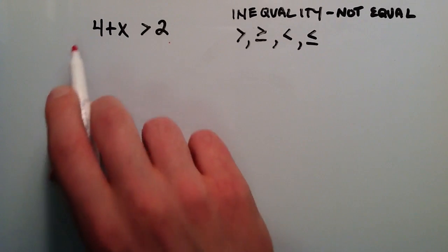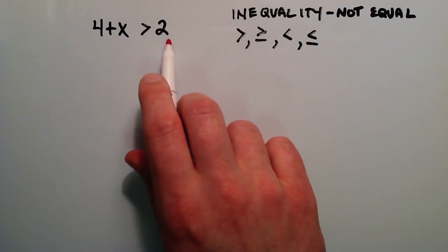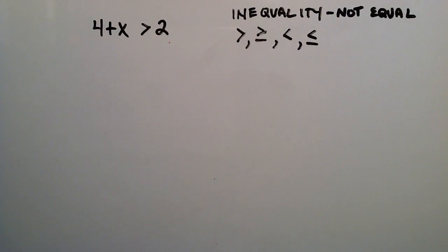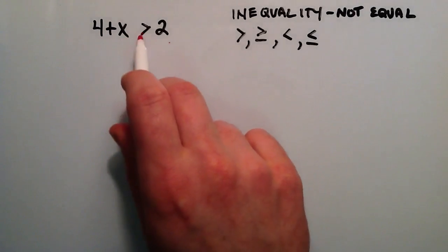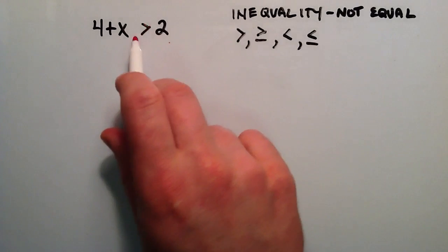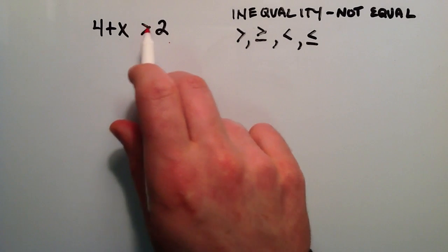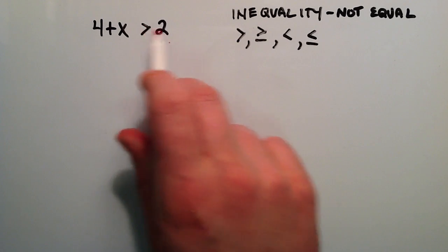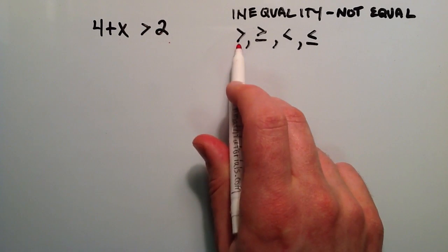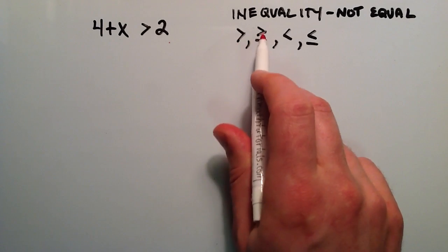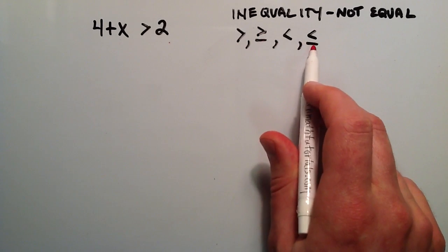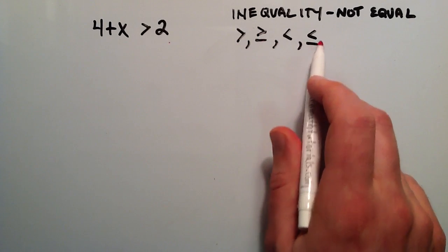We've got a single variable inequality, and the reason why it's a single variable inequality is we have one single variable, x, and we have an inequality symbol, which is the greater than symbol in this case. Other common inequality symbols are greater than, greater than or equal to, less than, or less than or equal to.